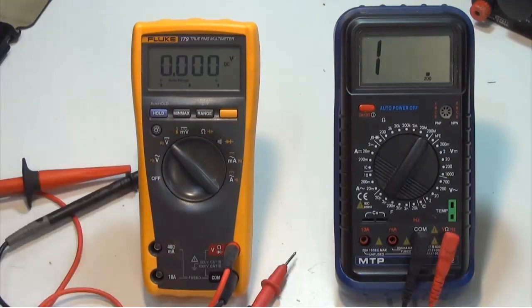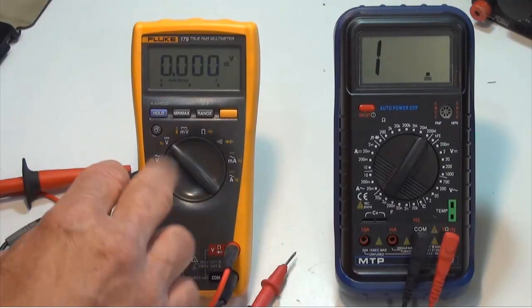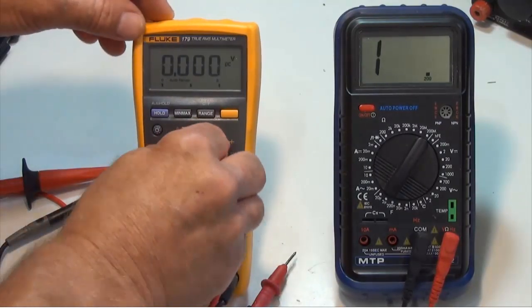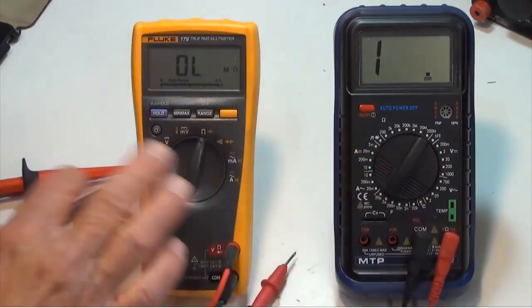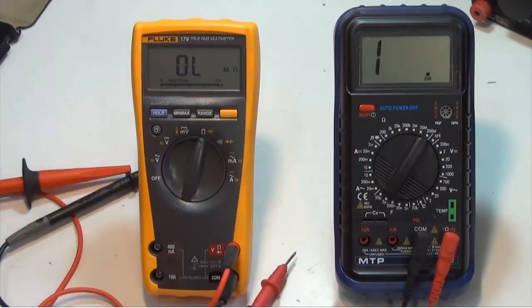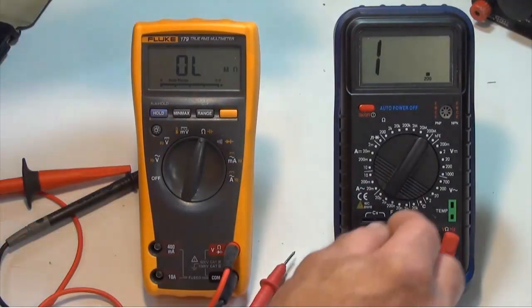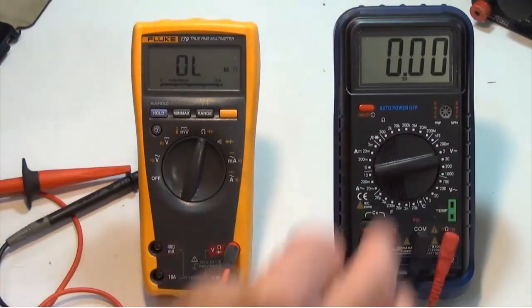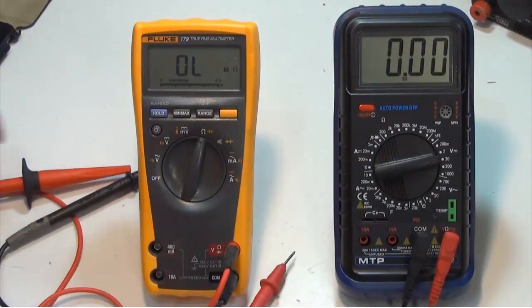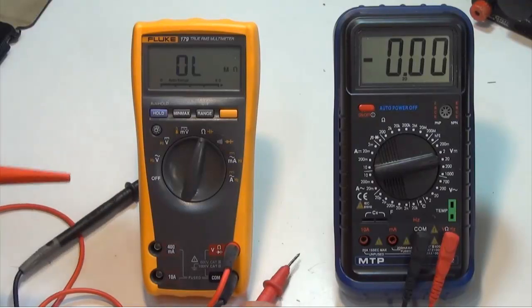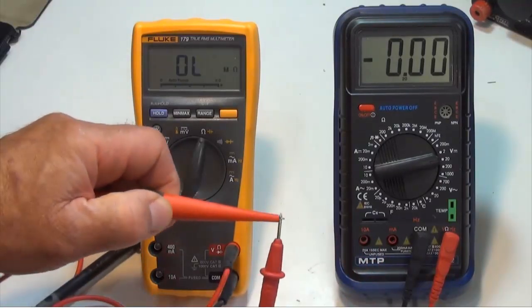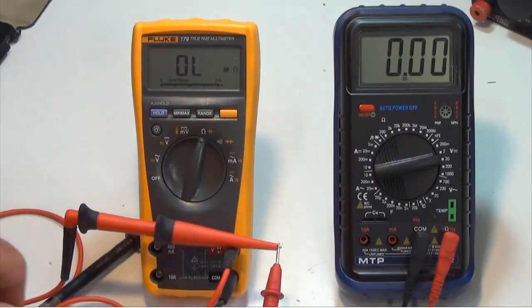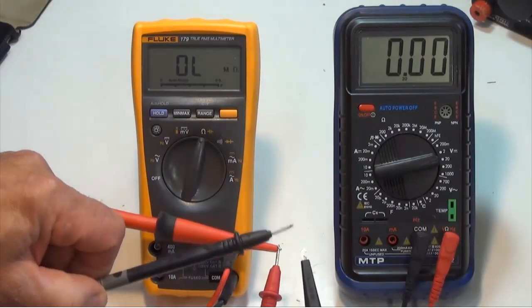Let's see how much voltage the Fluke produces when it's set to the ohms function, resistance function. So I'm going to set this to measure resistance, and I'm going to set my MTP meter to measure DC voltage. I'll start out on the 20 volt range since I'm not sure what the Fluke is going to put out. And let's connect the probes up again, red to red, black to black.